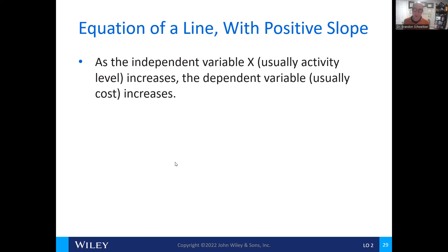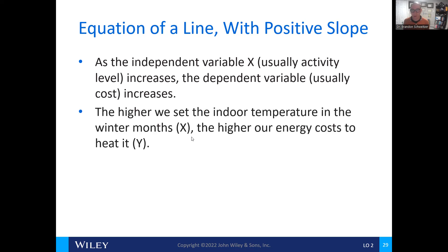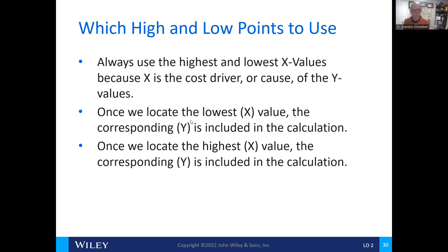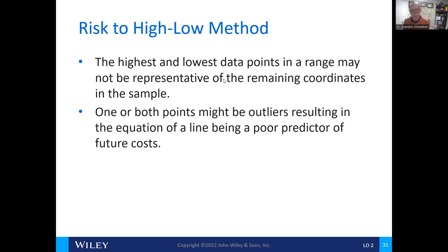The independent variables X typically increase with the level of activity. Similarly, the dependent variables usually increase as well when the level of activity increases. For example, the higher we set an indoor temperature during the winter months, the more energy costs we'll use, which is a form of heating. Looking at the high-low method, we analyze that the highest and lowest values are based off of the cost drivers. It's important to understand that the high-low method data points may not be representative of the remaining coordinates in the sample, so we must understand the various points of data before making an analysis.